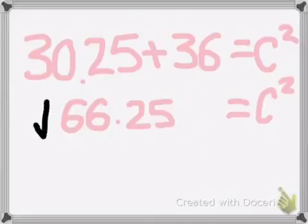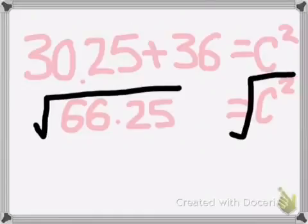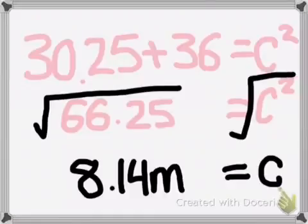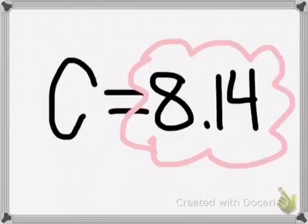The next step is to square root 66.25 and c. The square root of 66.25 is 8.14. c equals 8.14. That's how you use the Pythagorean theorem in math.